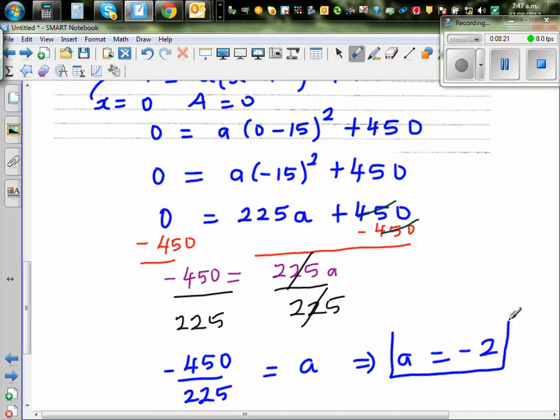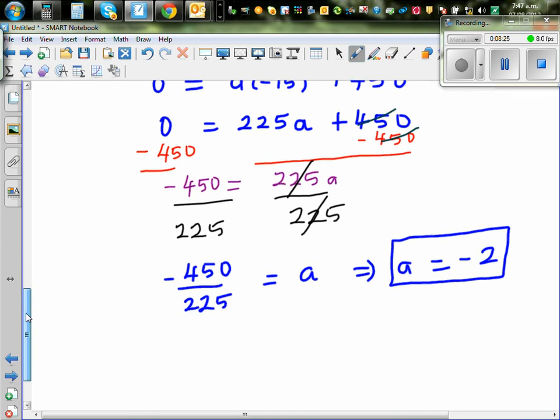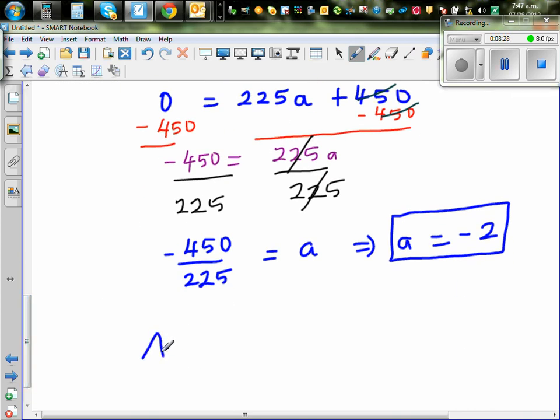I was wrong in saying that this is a fraction number. This has become steeper. Final answer is area, you can also write this in terms of y, is minus 2 times x minus 15 the whole squared plus 450.